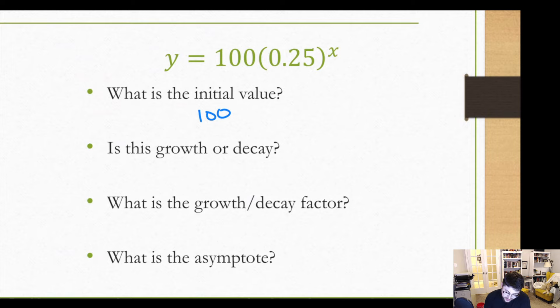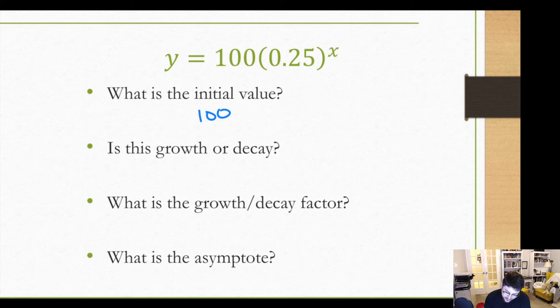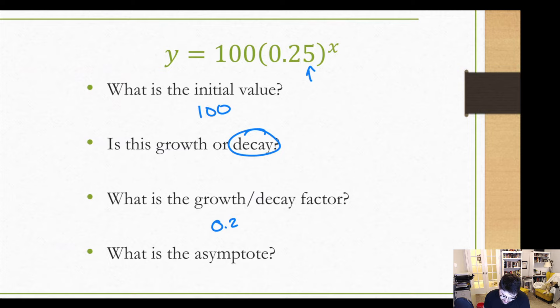The second problem, the initial value is 100. We are looking at a growth factor of 0.25, or decay factor I should say, because this is decay. That is less than 1. So 0.25 is our decay factor. Our asymptote is also y equals 0.